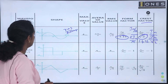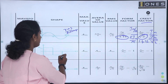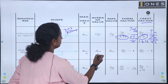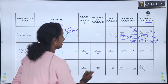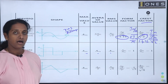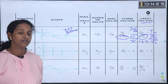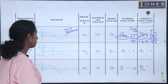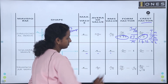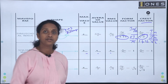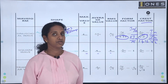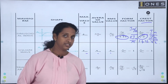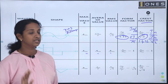For a square wave, the maximum value, average value, and RMS value are all the same, giving a form factor of 1. We also consider the triangular wave, half wave rectifier output, and full wave rectifier output, where the RMS and average values differ.